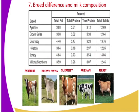Finally, we can look at breed differences. I have tabulated different types of breeds: we have Ayrshire, then Brown Swiss, we have Jersey, we have Friesian — another name is Holstein strain — and finally the Milking Shorthorn. The total fat content percentage for Ayrshire is 3.88%.